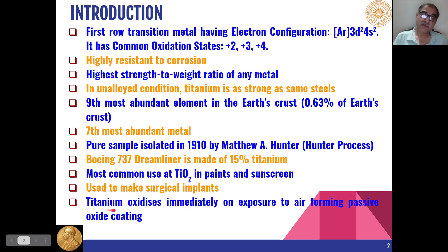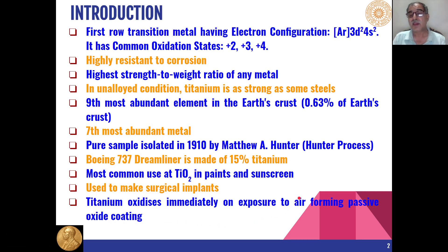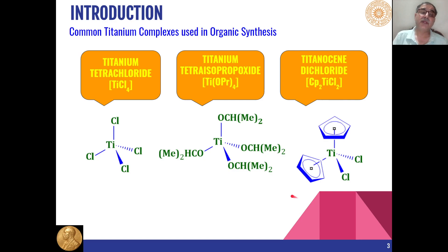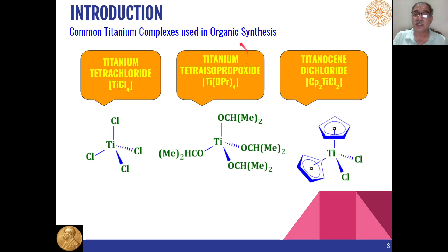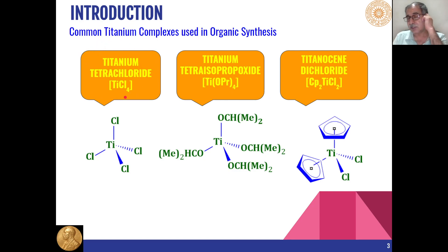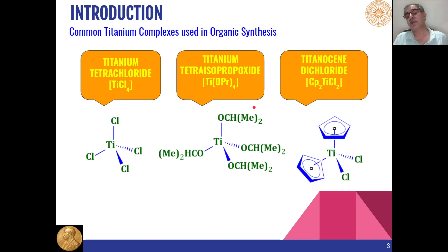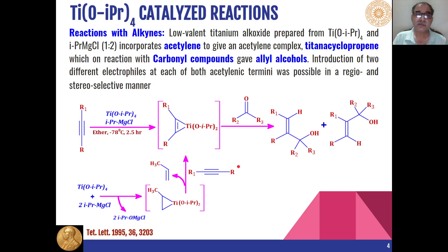Titanium complexes have many important applications in organic synthesis. The commonly used compounds of titanium are titanium tetra-isopropoxide and titanocene dichloride. In previous lectures we have already seen the applications of titanium tetra-isopropoxide in organic synthesis, and in the present lecture we will continue discussing those applications.